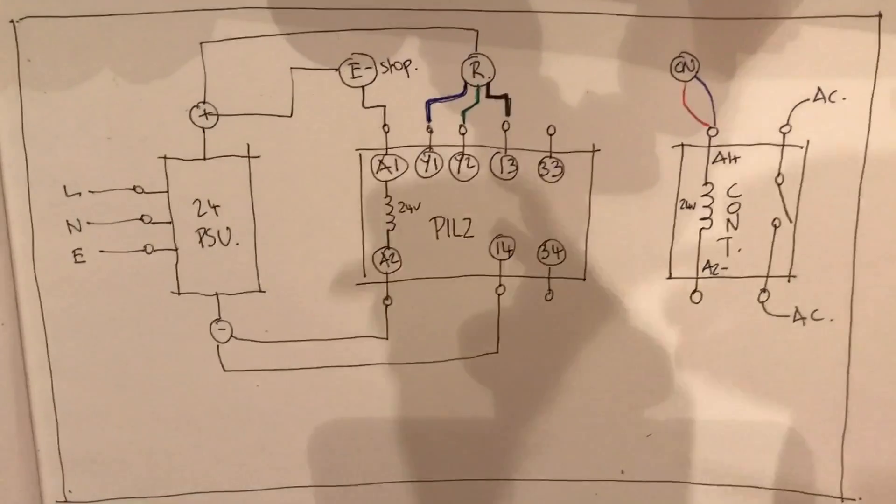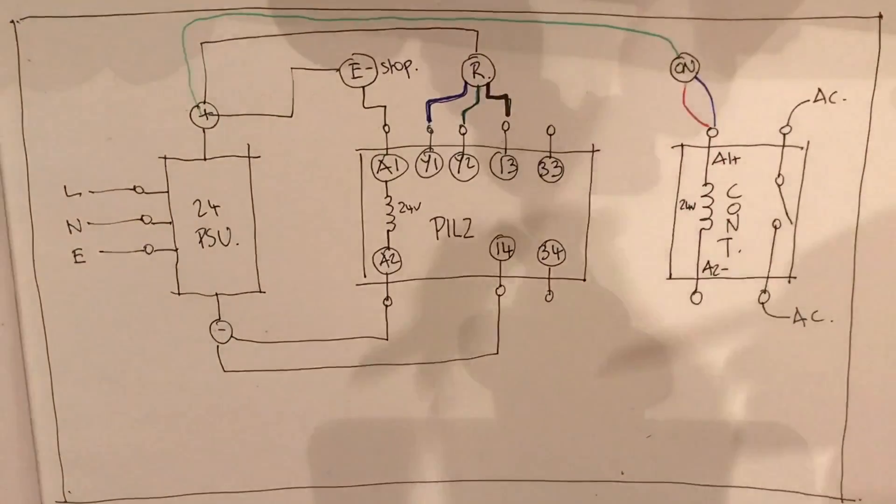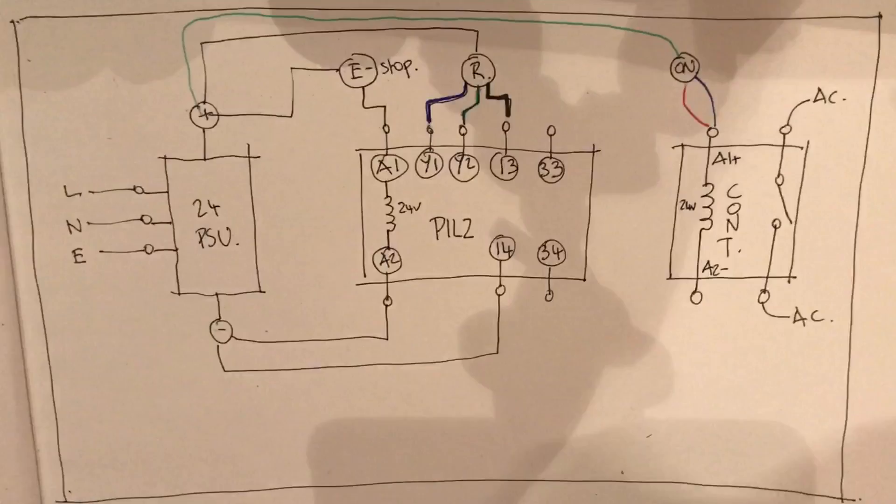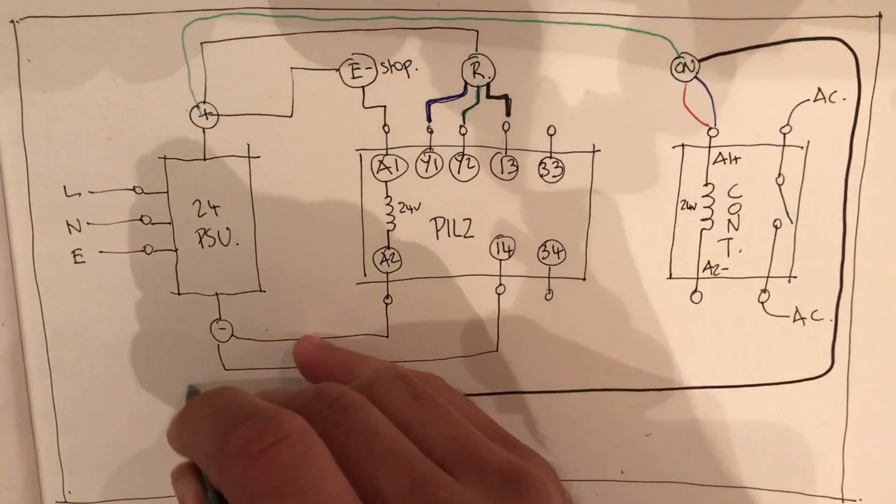We're going to take the green from the positive terminal round into there, and take the black round to negative.